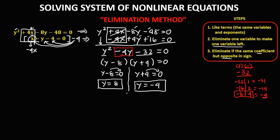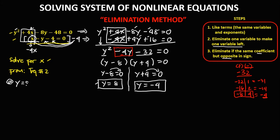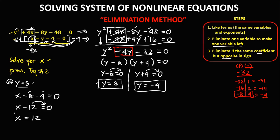To solve for x, substitute each y value into equation 2. At y equals positive 8: x minus y minus 4 equals 0 becomes x minus 8 minus 4 equals 0, so x minus 12 equals 0, giving x equals positive 12.